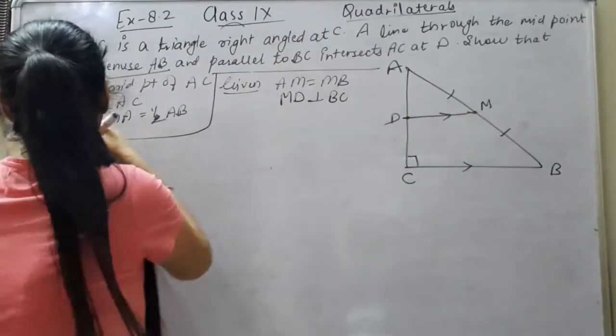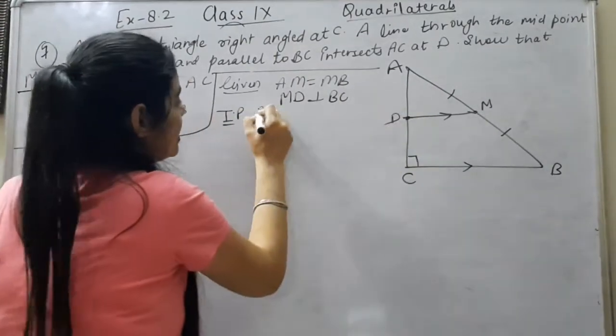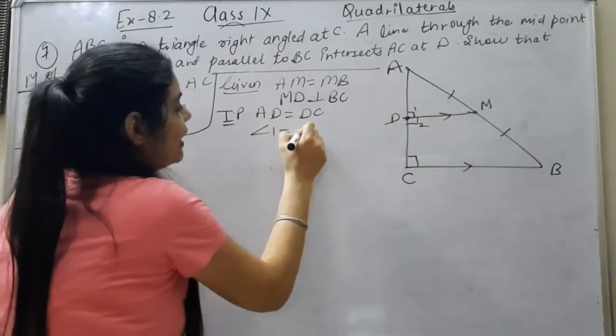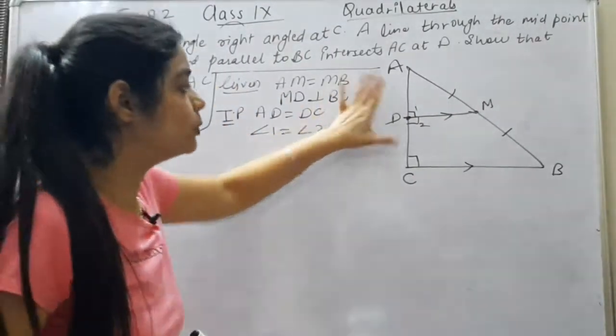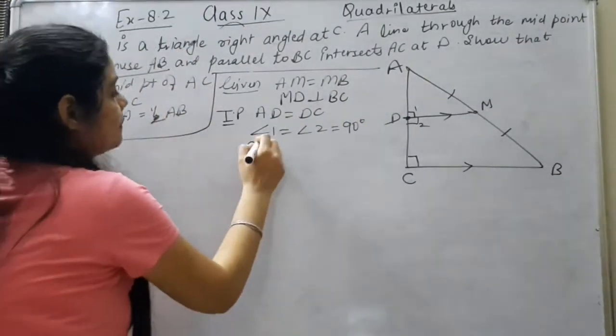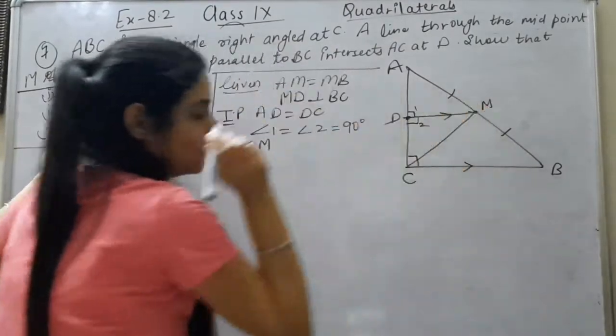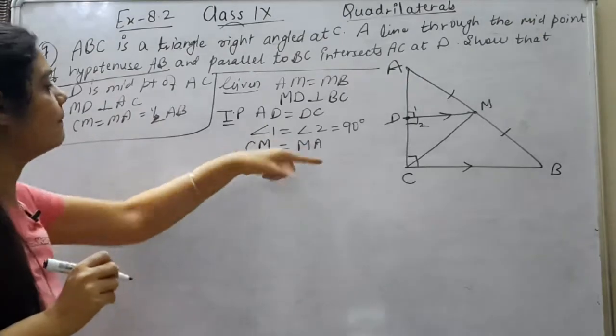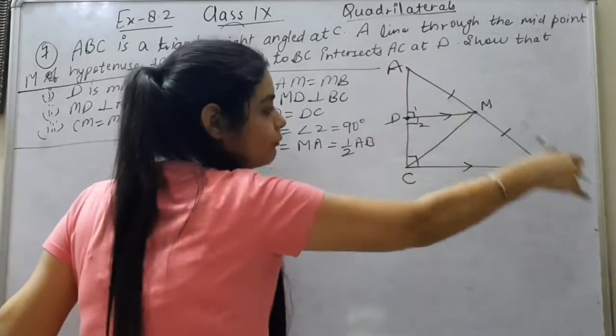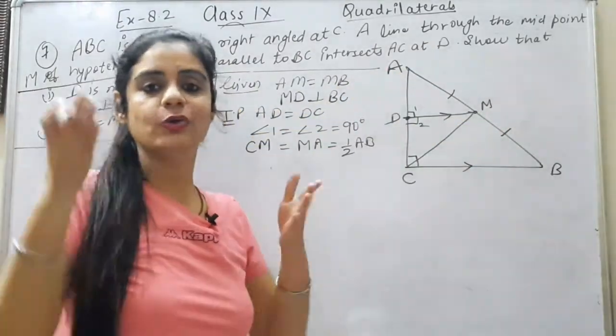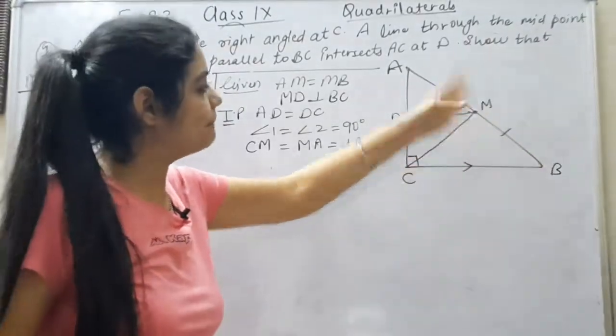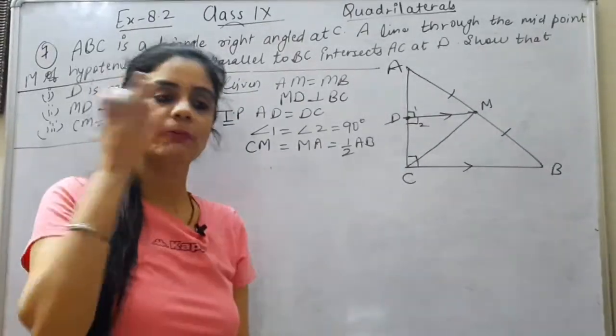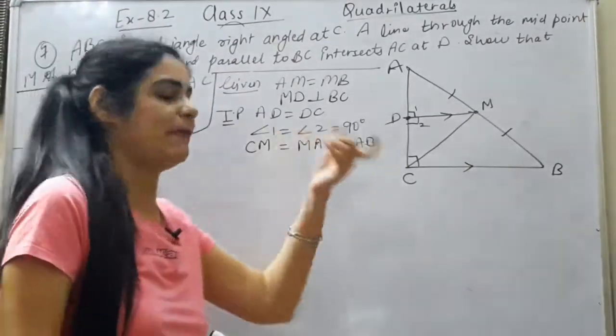In given I'll also write that MD is parallel to BC. What will we prove? Show that D is the midpoint of AC, or AD equals DC to prove. Second, MD is perpendicular to AC. If I take this angle 1 and this angle 2, then I will prove angle 1 and angle 2 are 90 degrees, then MD is perpendicular to AC. Third part: CM equals MA. CM and MA are equal together. And this also proves that CM and MA are half of AB. AM is half of AB because M is midpoint, and MB is half of AB. Basically we have to prove that CM and AM are equal. When MA is half AB, then CM will be half AB because we will prove CM equals MA.